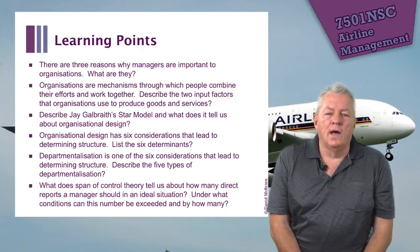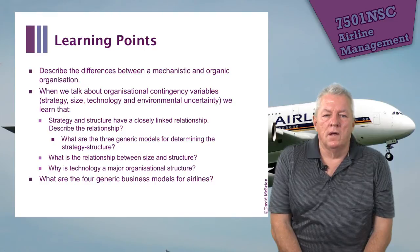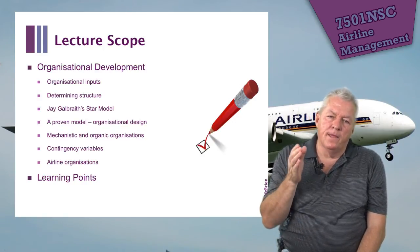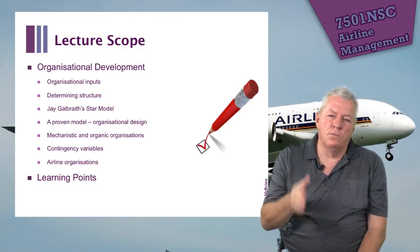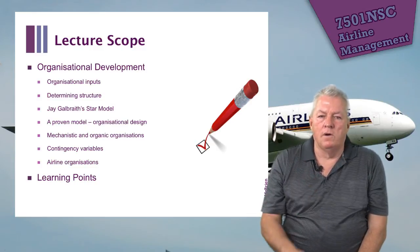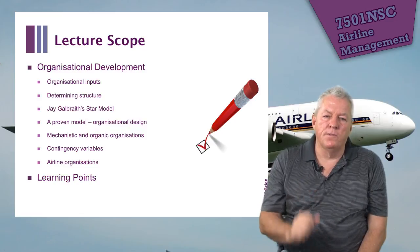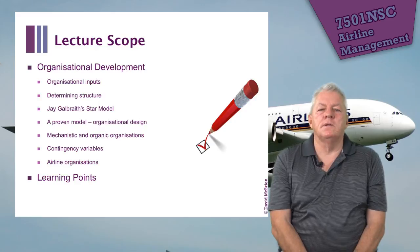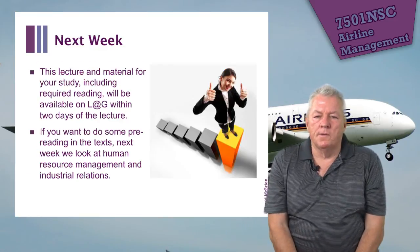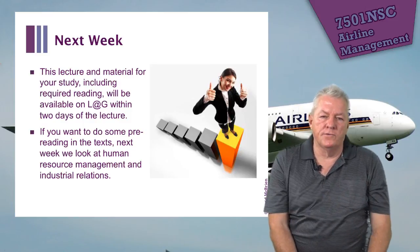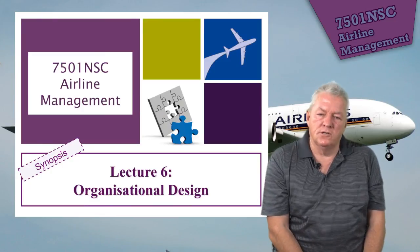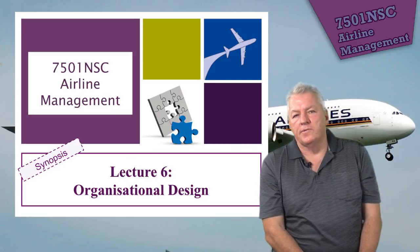Some of the learning points from this discussion are shown here. Organizational design is a most important aspect — if you get it wrong, the organization won't have the efficiency and effectiveness needed to achieve the performance outcomes you want. It's a very specialist area and may require hiring specialists, either short-term or long-term, to help. Hopefully the learning points bring out the salient points from this synopsis lecture. Next week we look at human resources and industrial relations. That brings lecture six, organizational design, to an end — thank you.